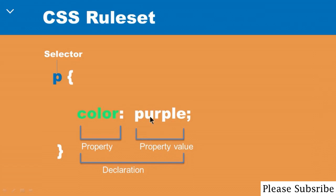In this example, I'm styling the paragraph tag — the P here, which is the selector. I'm changing the color property to purple. And when you finish, you have to end it with a semicolon. A semicolon is very important because it tells the CSS rule set that this is the end of this declaration. The entire thing from the color property to the property value is called a declaration. So these are the various parts of a CSS rule set.